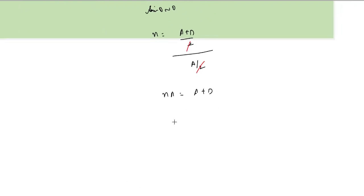You bring A to this side, then D is equal to nA minus A. It becomes (n minus 1) into A. So deviation...